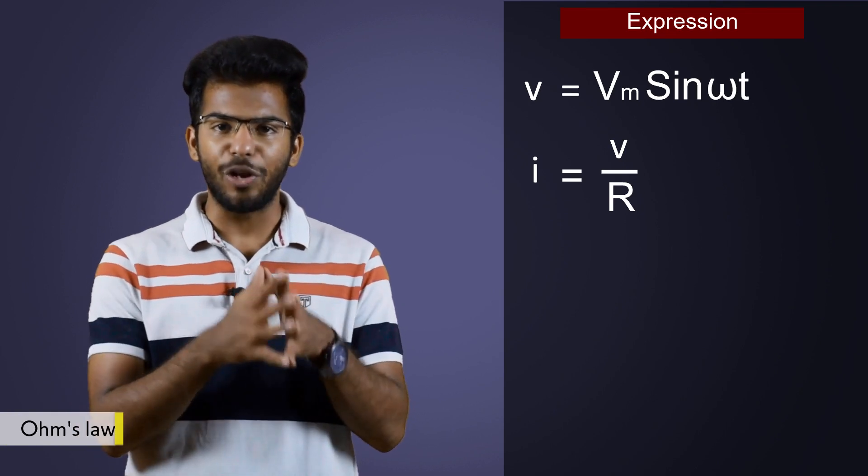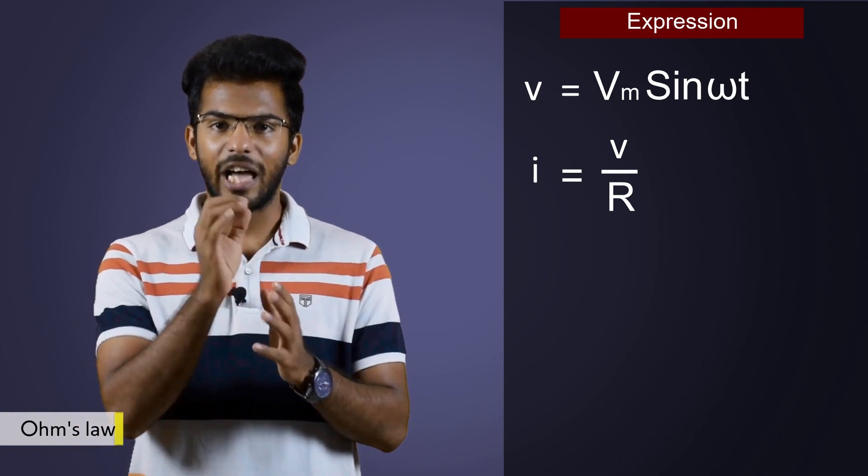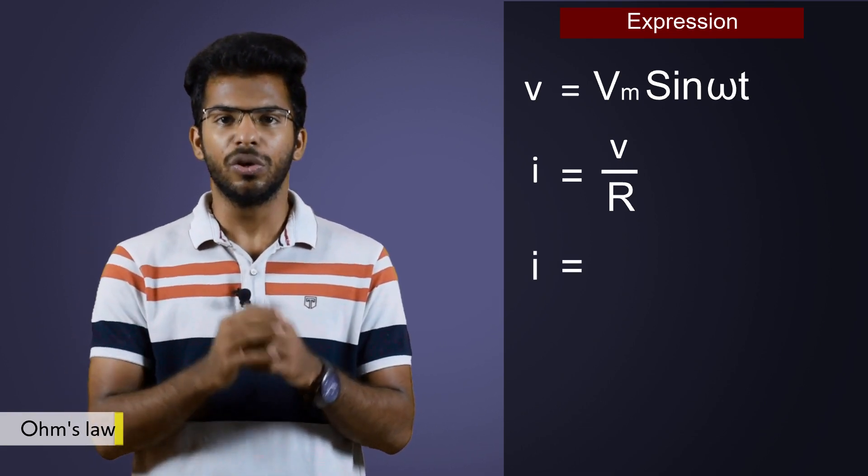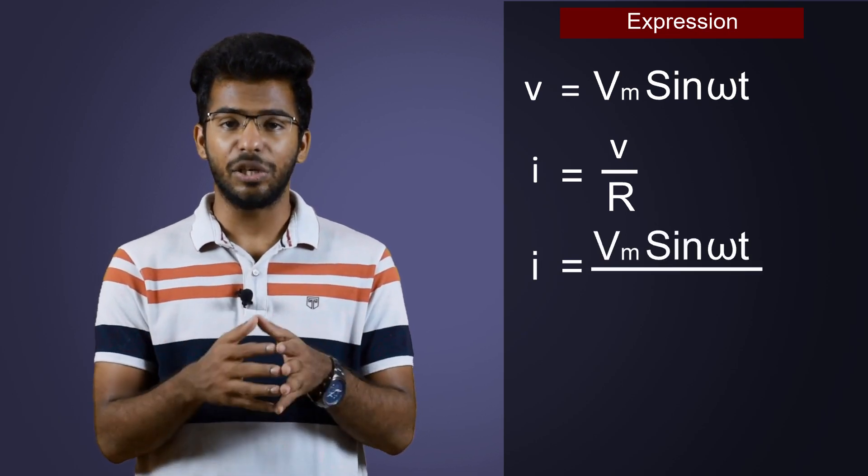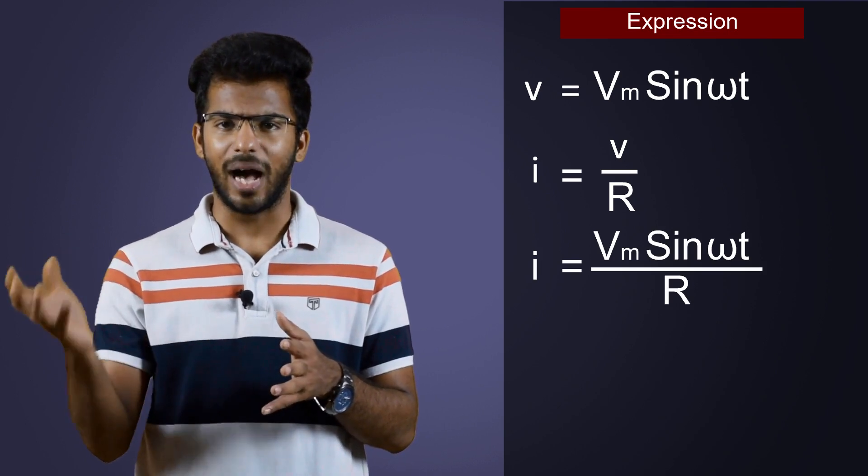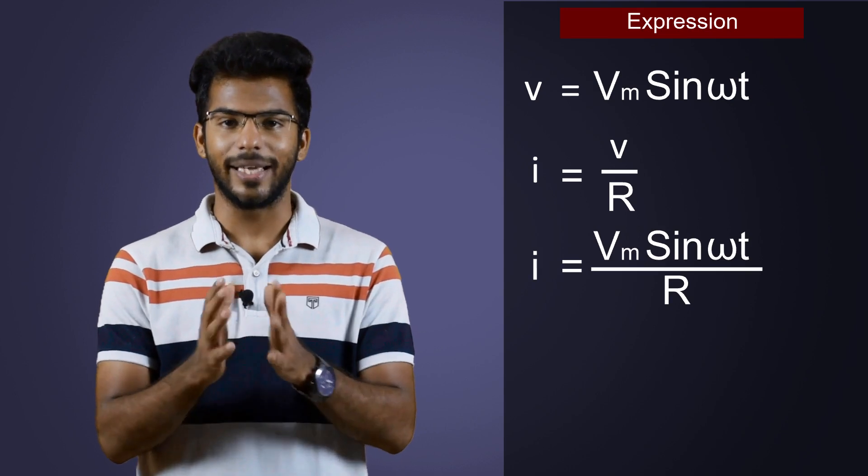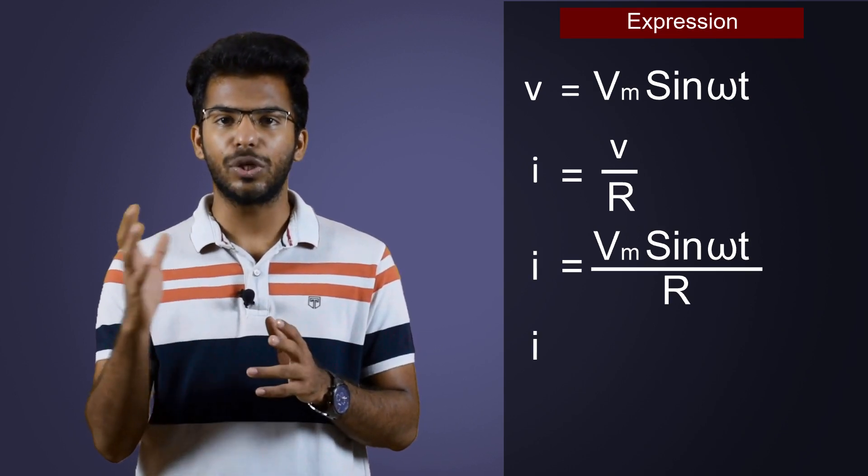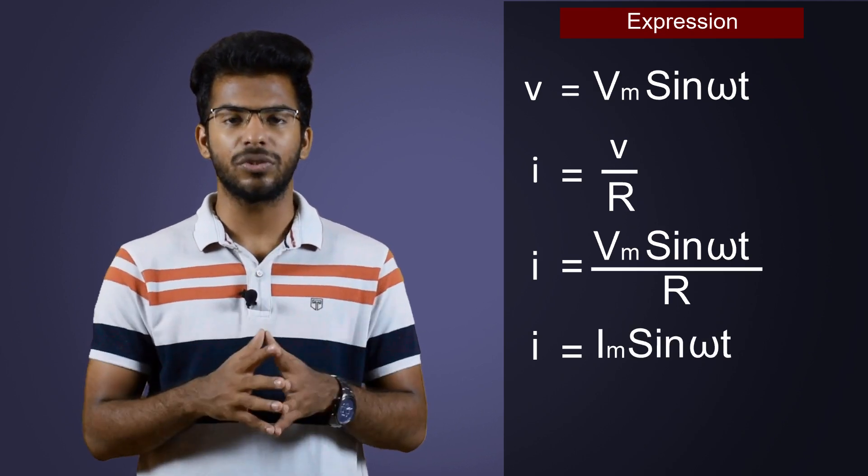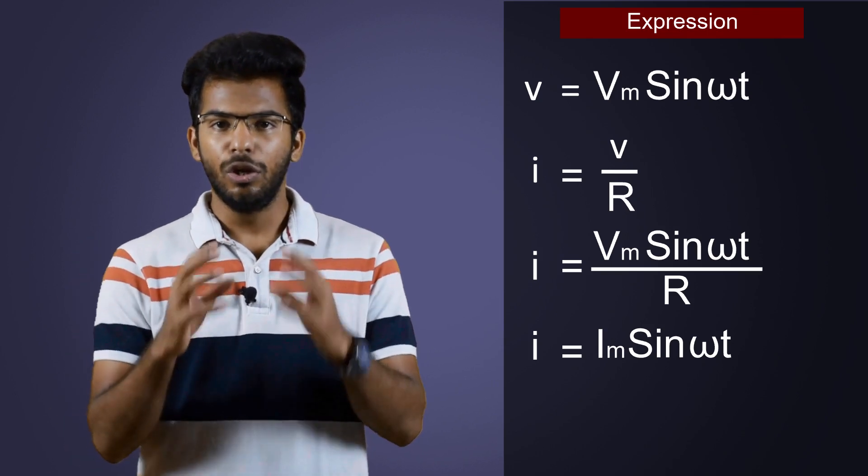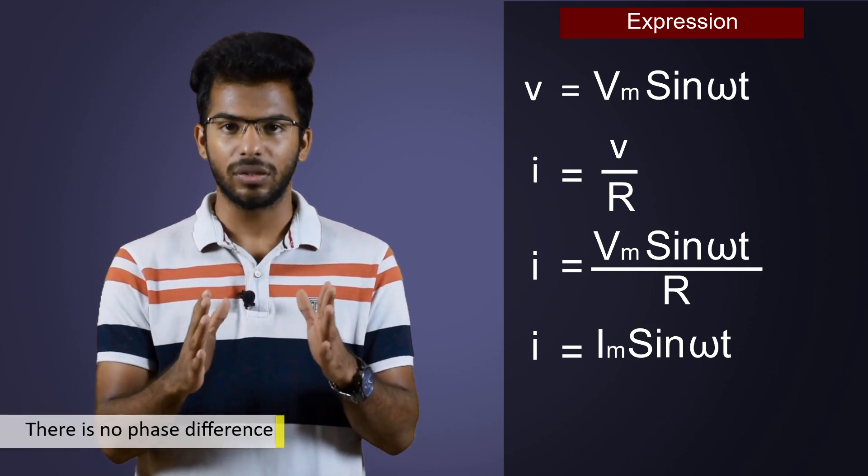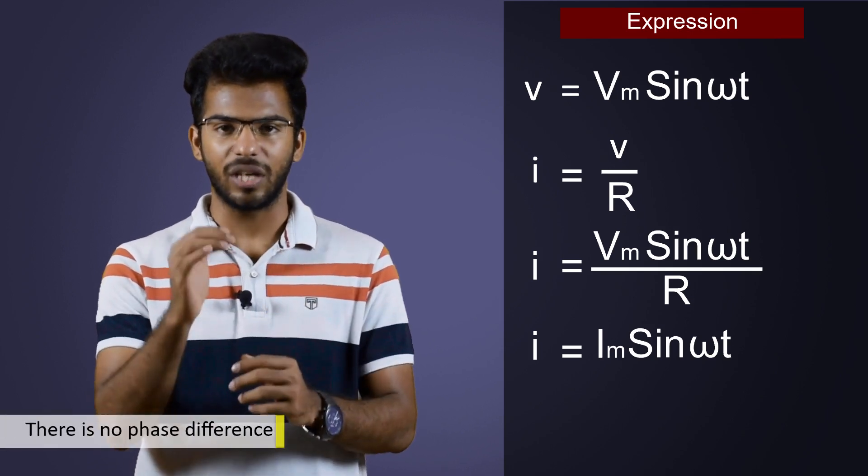If we want the value of instantaneous current I, then I will be equal to V by R. So, I is equal to Vm sine omega t divided by resistance R. But, what is Vm by R? It is the maximum current Im. So, we get I is equal to Im sine omega t. Therefore, we have two expressions, one for voltage and one for current. Looking at the two equations, we can tell that there is no phase difference because sine terms in both the equations are the same.